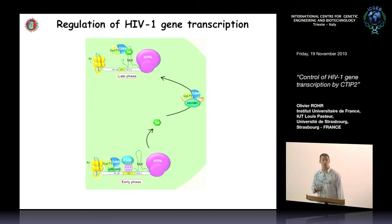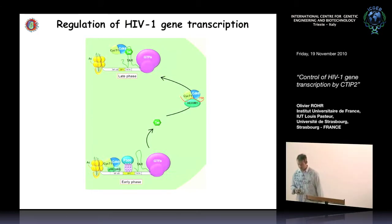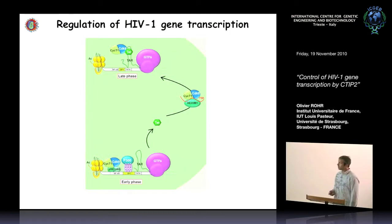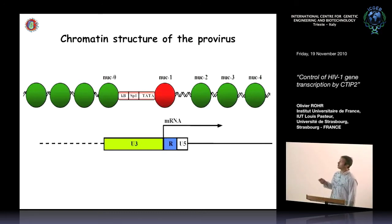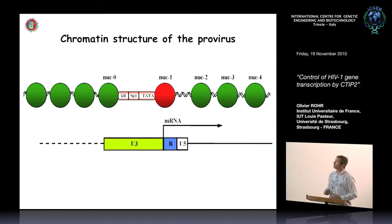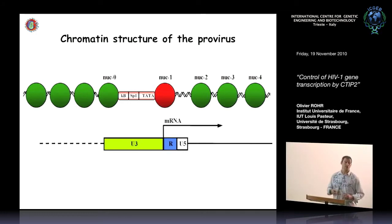The Tat protein recruits the P-TEFb complex made by Cyclin-T1 and CDK9 from an inactive complex to the TAR region. This recruitment promotes phosphorylation of RNA Pol II and elongation of transcripts, leading to viral production. These steps are also controlled by chromatin structure. The nucleosomes are well-positioned at the provirus, with one key nucleosome, NUC1, located just after the initiation site. The stability of this nucleosome is very important for transcription efficiency — heterochromatin structure disfavors HIV-1 gene production, while destabilization of NUC1 allows a high rate of transcription.